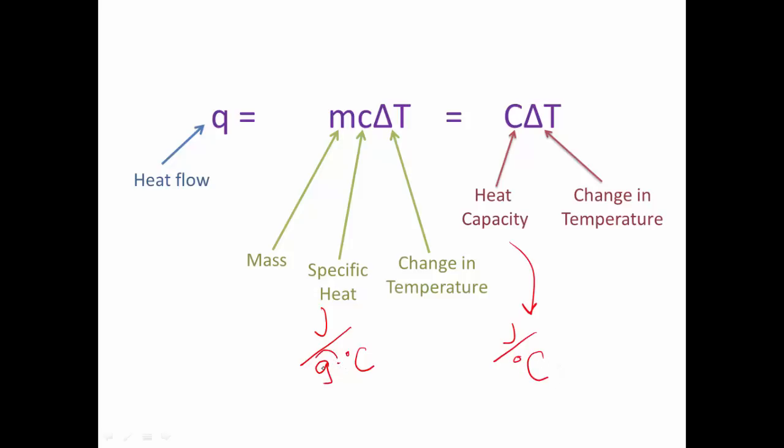Notice that our specific heat has mass in it, and our heat capacity does not. When you have mass in that constant unit, you need to multiply it by mass in order for those units to cancel out. So let's take a look at how we can use this equation in further applications.